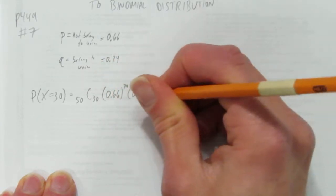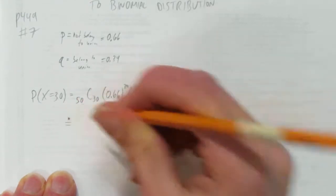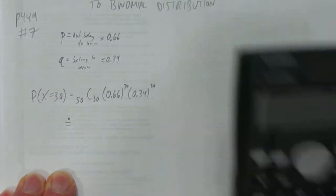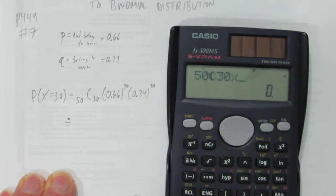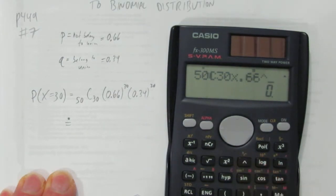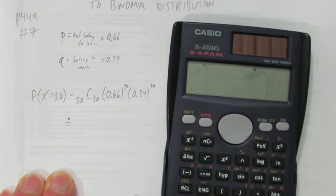And our belong to union rate happens 20 times. And now we'll calculate that, it's for sure going to be rounded on the calculator, so I put a rounding dot. That's 50 choose 30 times 0.66 to the power of 30 times 0.34 to the power of 20.